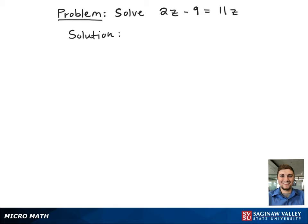Here we have the linear equation 2z minus 9 equals 11z. We're going to first rewrite it to see it a little bit simpler down below. So 2z minus 9 equals 11z.